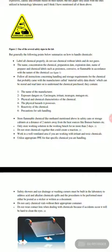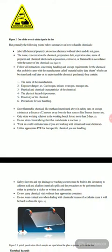The MSDS also contains information on teratogenic and mutagenic risks, physical and chemical characteristics, physical hazards, activity of the chemical, and precautions for safe handling. Store flammable chemicals like methanol in a safety can or storage cabinet at a distance of at least 2 meters away from heat sources like a Bunsen burner. Only store working solutions at the bench for no more than 2 days. Do not store chemicals together that could react with each other. Work in a well-ventilated area when working with irritant and toxic chemicals, and utilize appropriate PPE for the specific chemicals you are handling.